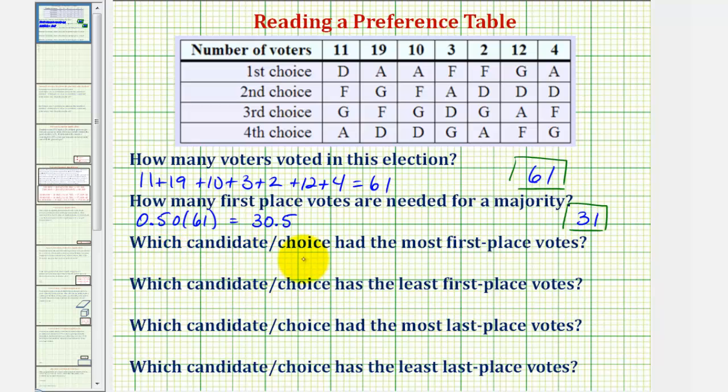Next, which candidate or choice has the most first place votes? We can determine this by analyzing the first and second rows. Notice how candidate D received 11 first choice votes, but candidate A received 19 plus 10 plus 4, or 33, first choice votes. F received 3 plus 2, or 5, and G received 12. And therefore, A received the most first place votes.